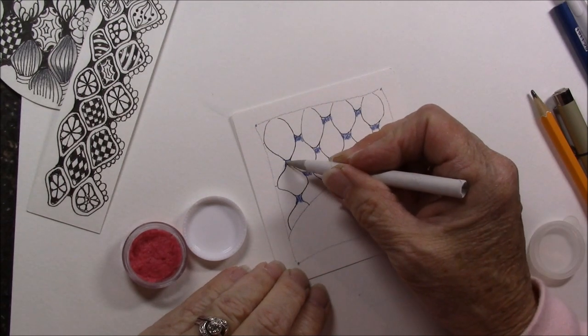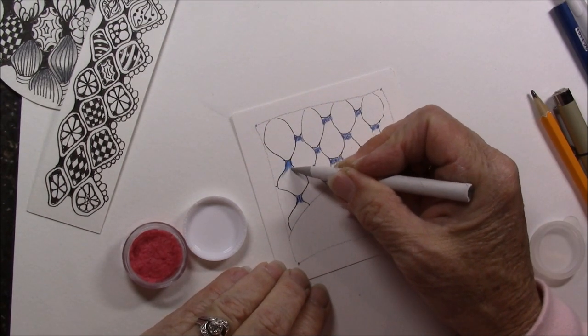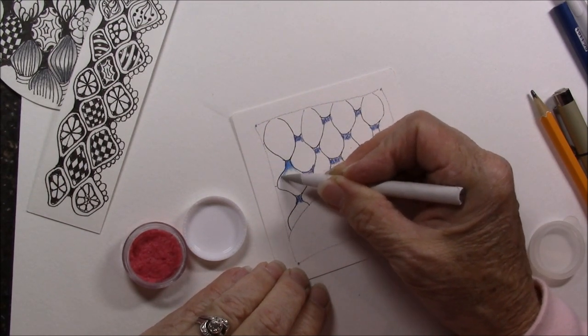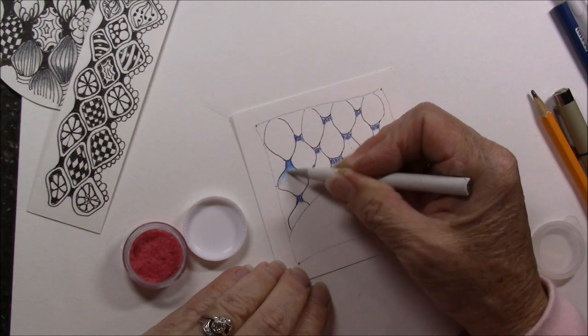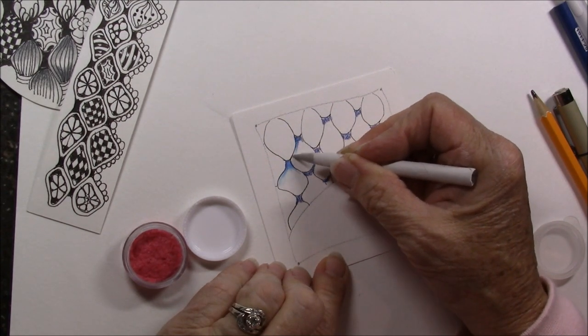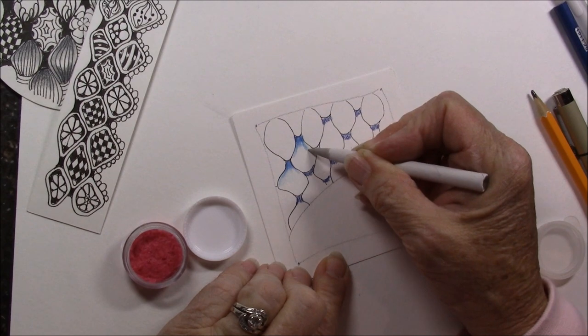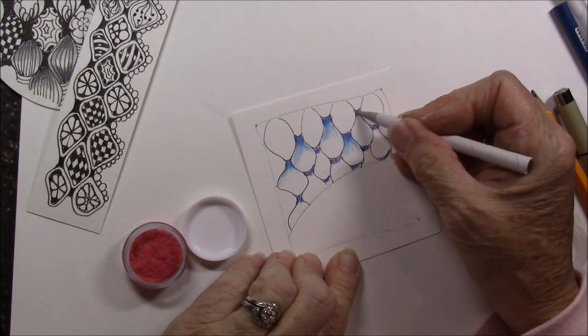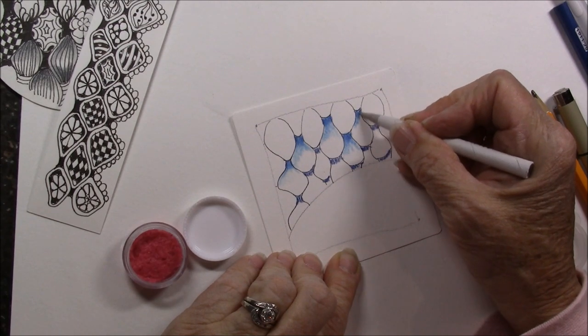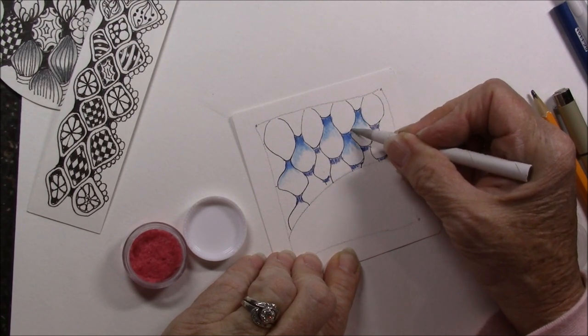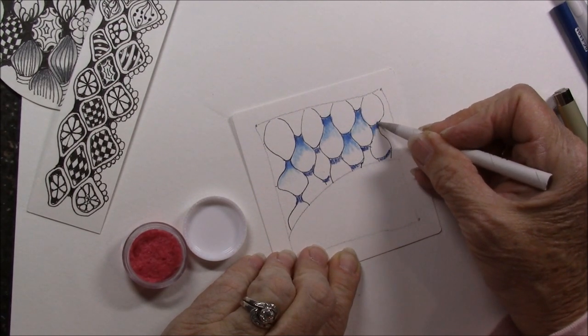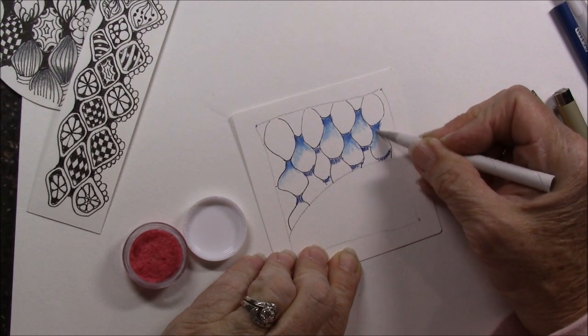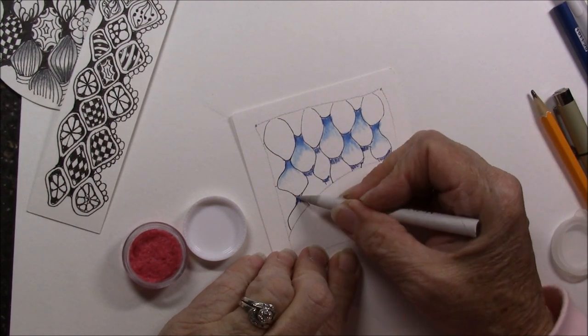I'm just dampening, you can see how it is dampening the end of that paper stump. Then I'm just going to blend out that color.